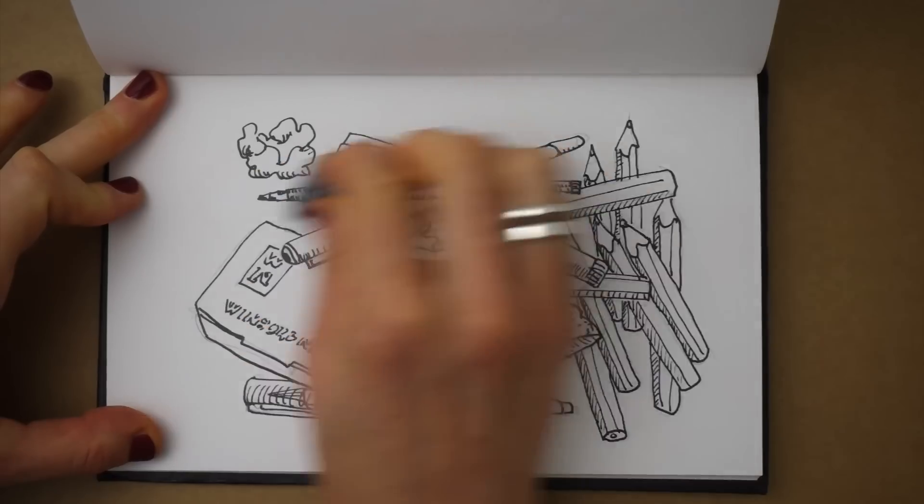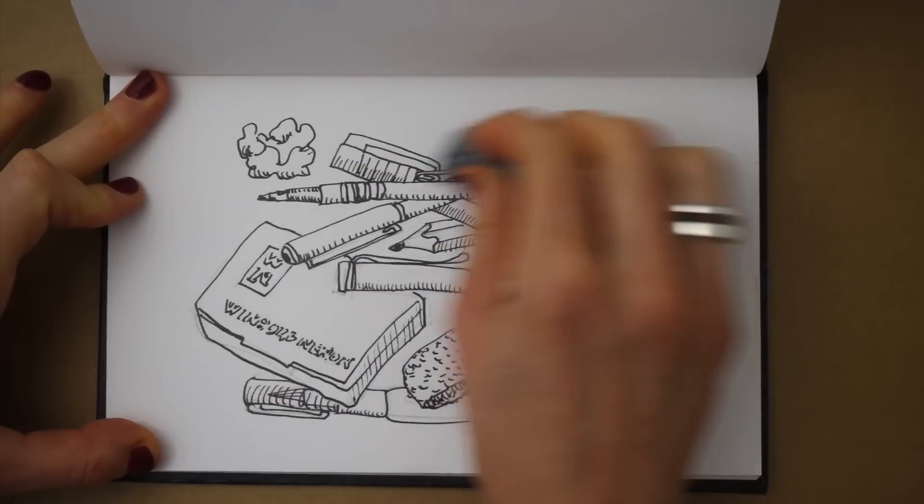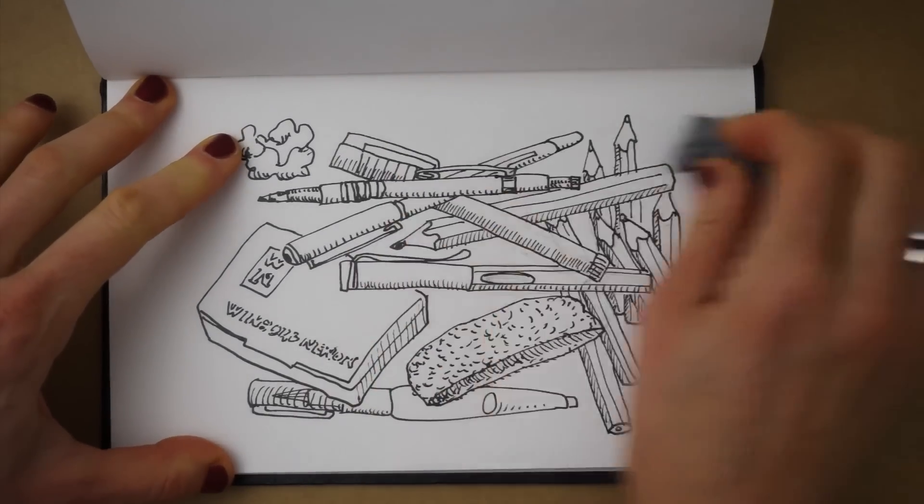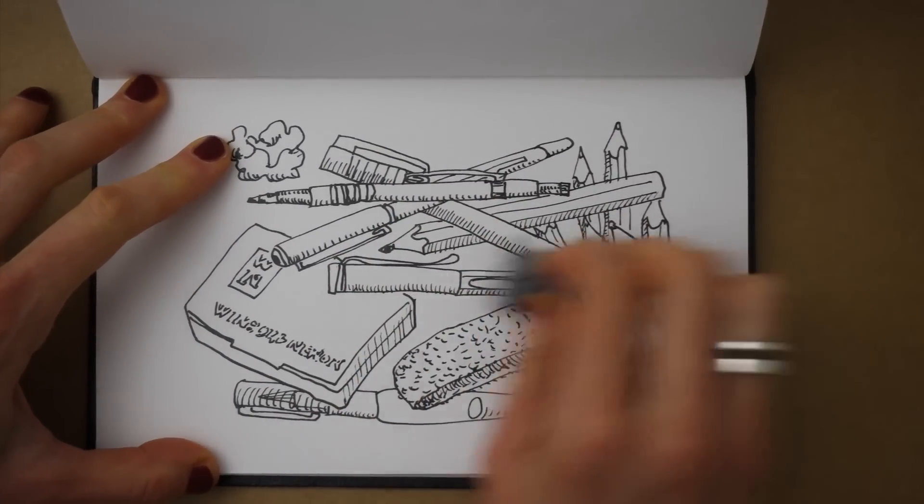I use a kneadable eraser to get rid of the pencil lines. The kneadable eraser is gentle to the paper and won't fade the ink. It's a lot nicer to your drawing than an average plastic eraser.